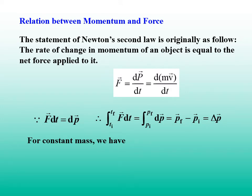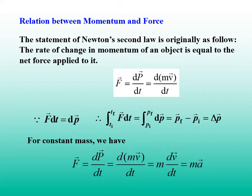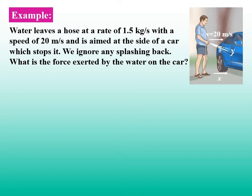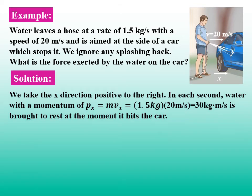For constant mass, we have F equals ma, an equation we have been familiar with for a long time. To have a clear understanding of the relation between force and momentum, let's look at this car wash example. Water leaves a hose at a rate of 1.5 kg per second with a speed of 20 m/s and is aimed at the side of a car which stops it. We ignore any splash-back.